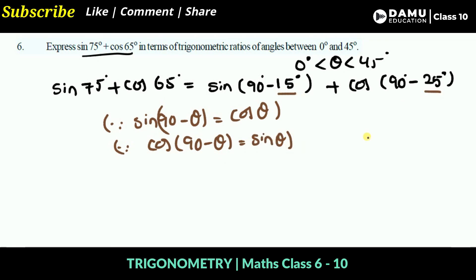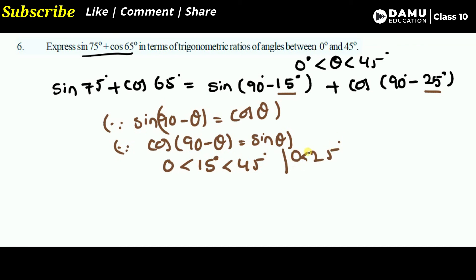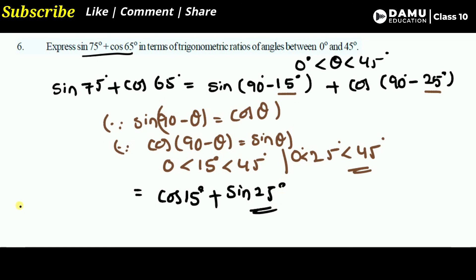Here theta is 15°, which is between 0 and 45, and 25° is also between 0 and 45 — both are satisfied. So sin75° plus cos65° equals cos15° plus sin25°. This is the required answer expressed in terms of trigonometric ratios between 0 and 45 degrees. Thanks for watching — please subscribe and share with your friends and family.